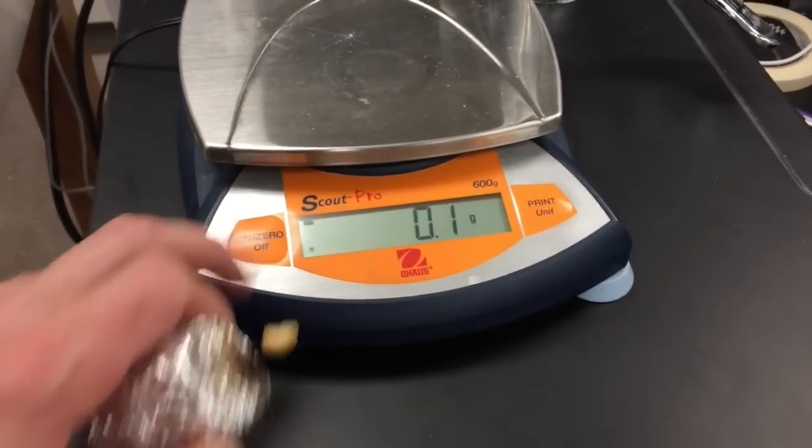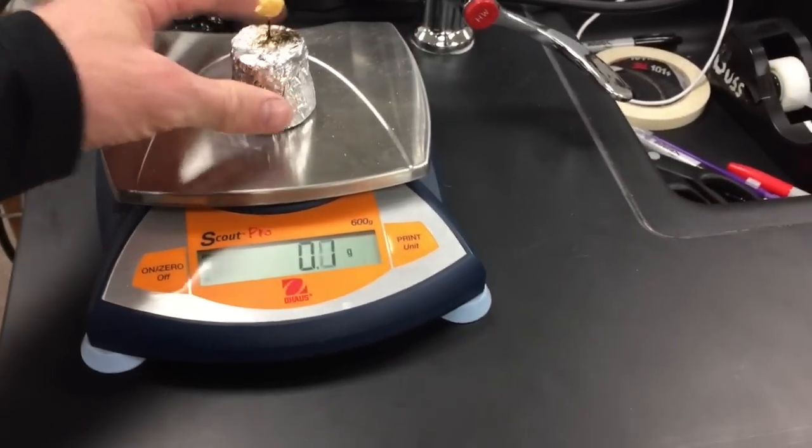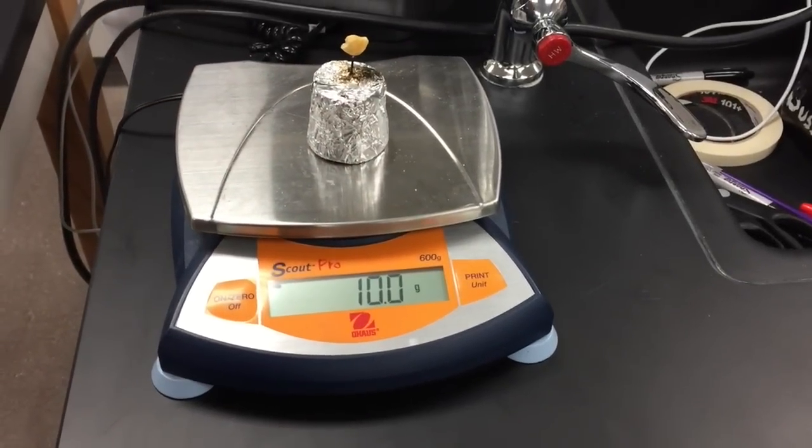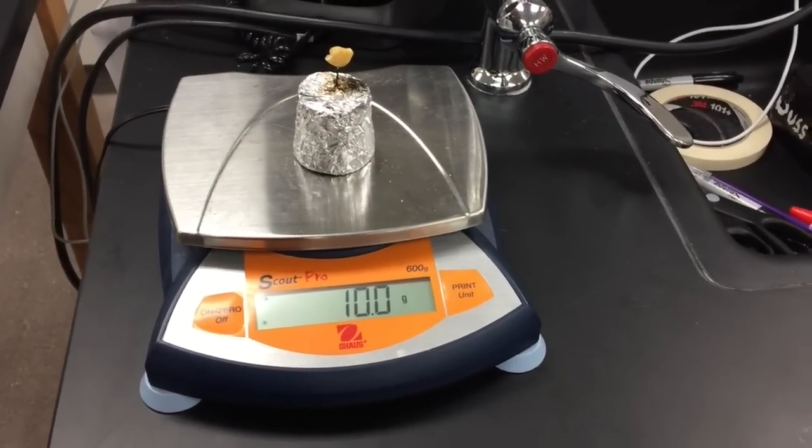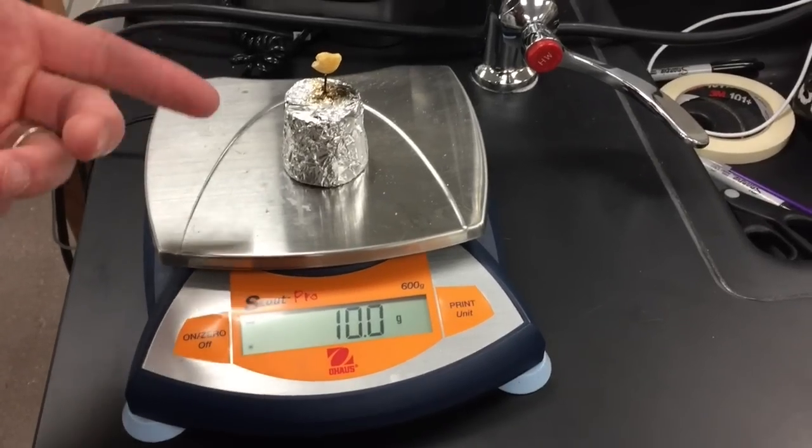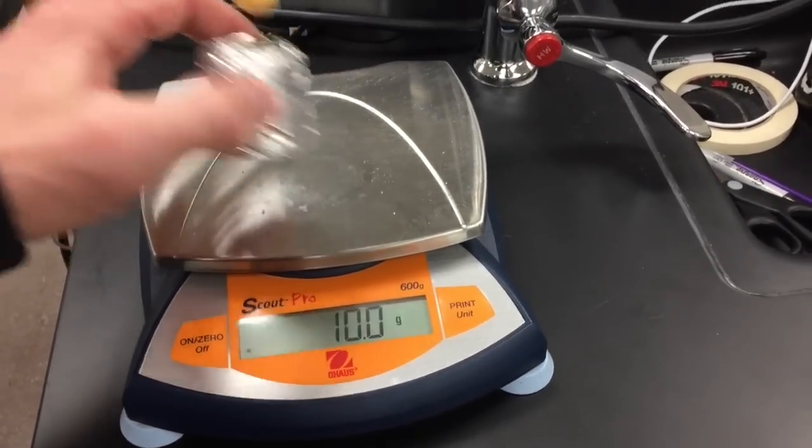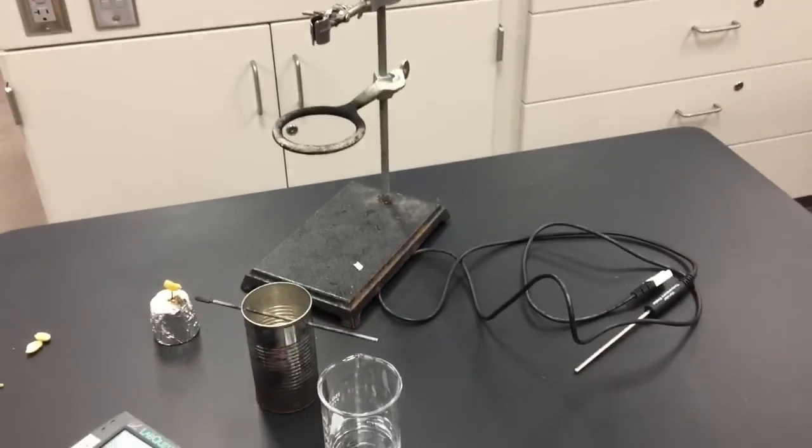Before I put it on the scale, I'll make sure that it's zeroed. Okay, so in this case I'd write down the food sample weighed 10.0 grams. The food sample doesn't weigh 10 grams, but that's what I'm going to write down as my initial weight because it's got the food sample on it.